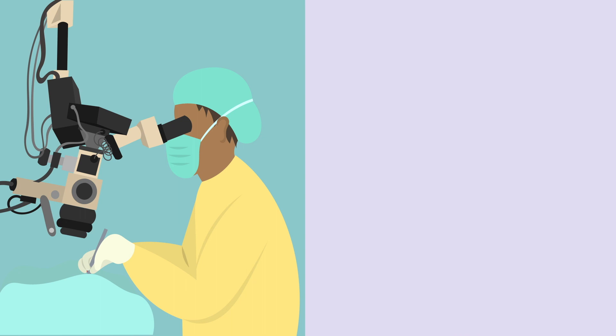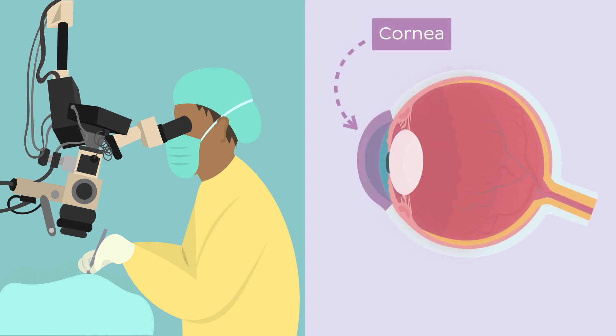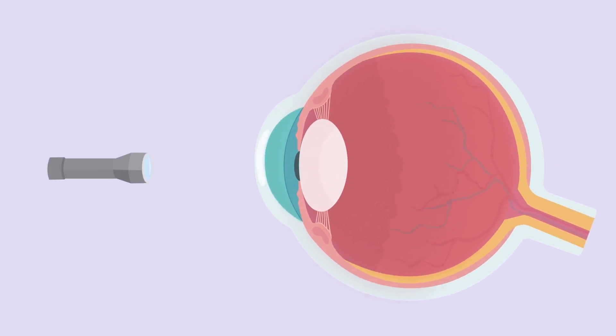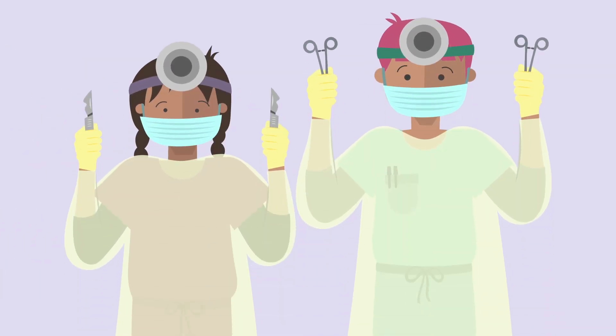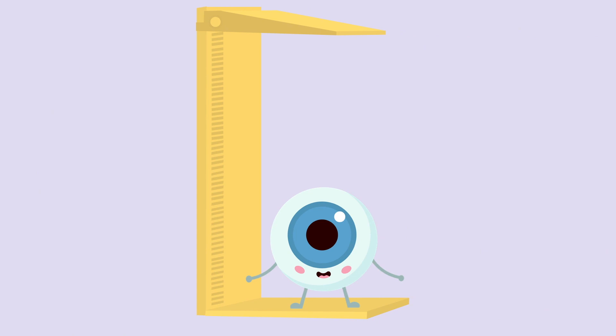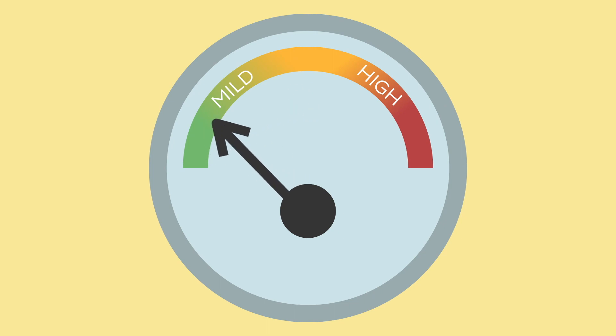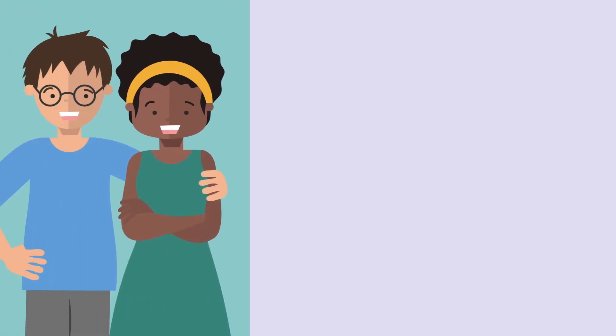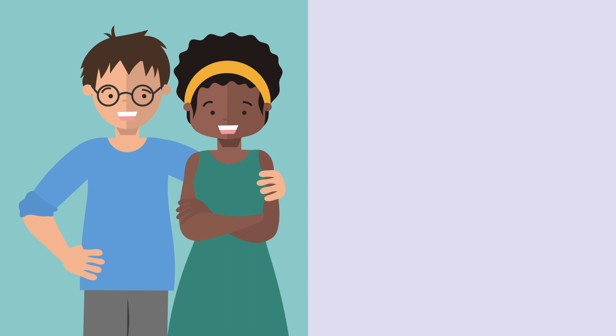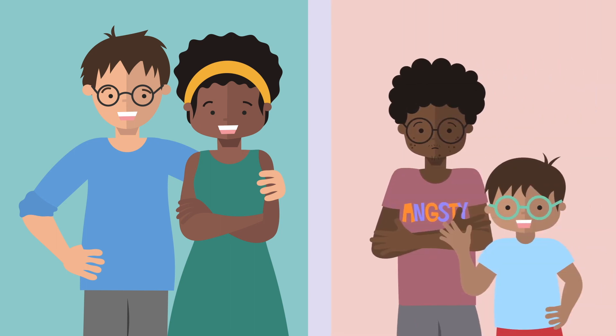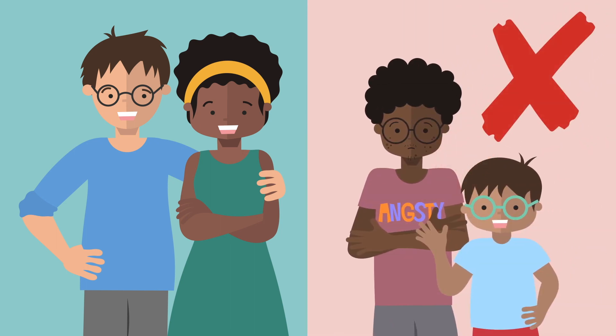Another option is refractive surgery, a procedure that alters the shape of the cornea to modify the degree of refraction that this structure causes on light rays. However, in most cases this type of surgery is indicated only after the eye has stopped growing, meaning the degree of hyperopia has stopped increasing and is now stable. This usually occurs in the third decade of life, so in most cases this procedure is not an option for children and teenagers.